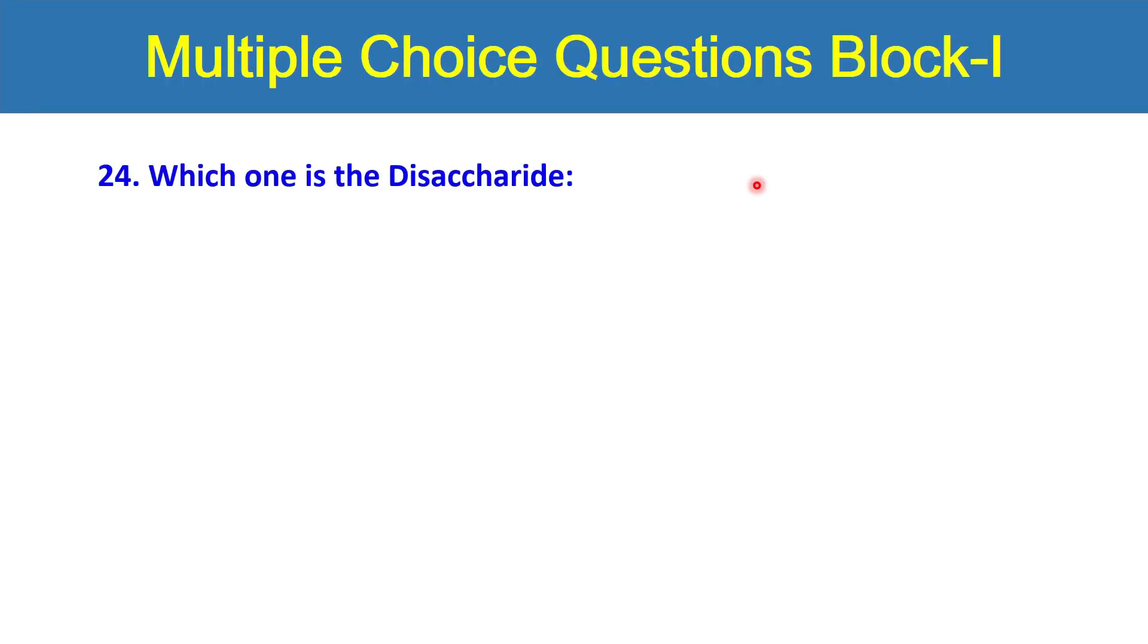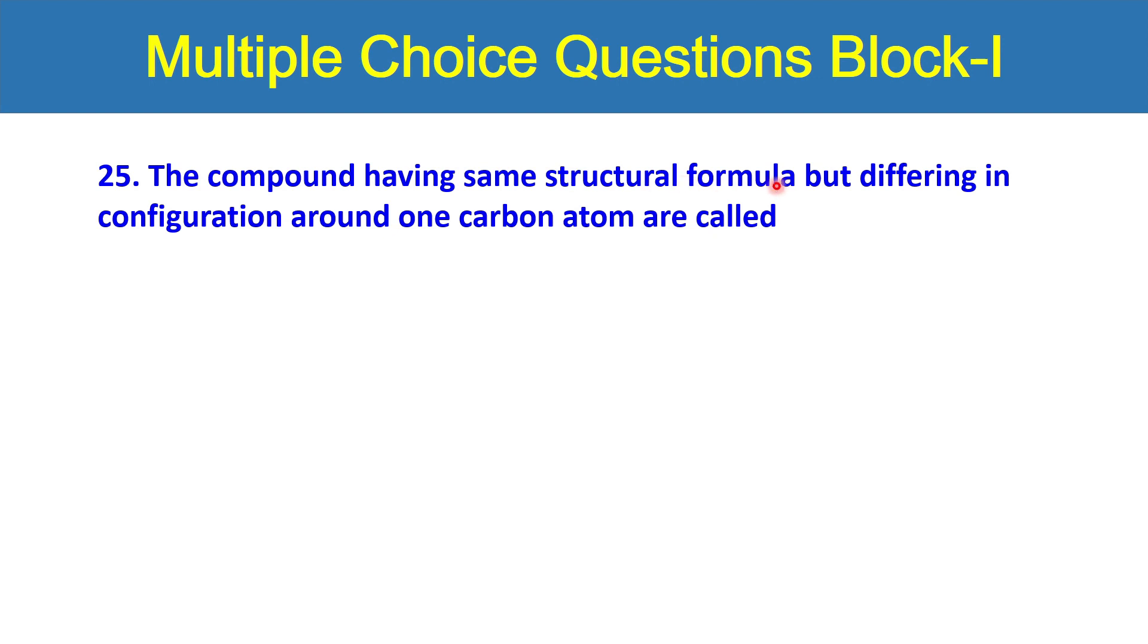The next question is which one is the disaccharide? These are sugars. You have to select the option which is disaccharide. Do you think erythrose is a disaccharide? Glucose? Ketoheptulose? Neuraminic acid? Or sucrose? Which is the right answer? Question number 25: the compound having same structural formula but different in configuration around one carbon atom are called: optical isomers, stereoisomers, anomers, epimers, or enantiomers?